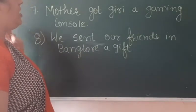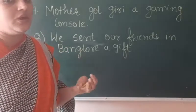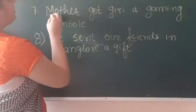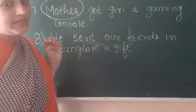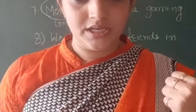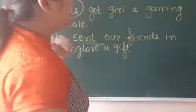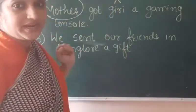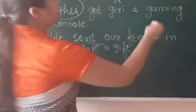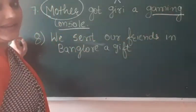Mother bought Giri a gaming console. Here, who is performing the action? Mother is performing the action. So, mother will be the subject. Now, Giri — Giri is receiving the gaming console. So, Giri is the receiver. It means Giri is the indirect object. Gaming console — so, what is she receiving? Gaming console. So, gaming console will be the direct object.